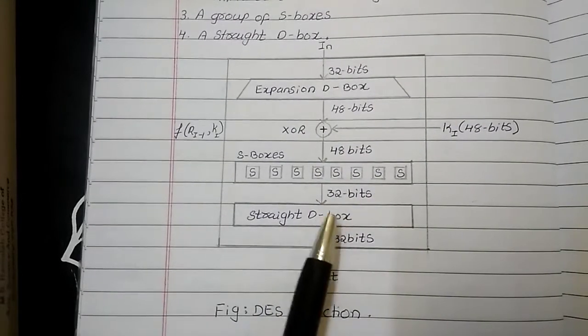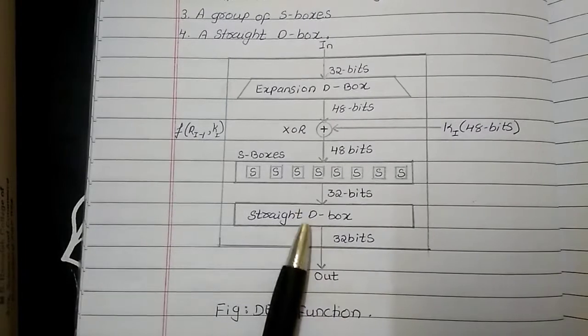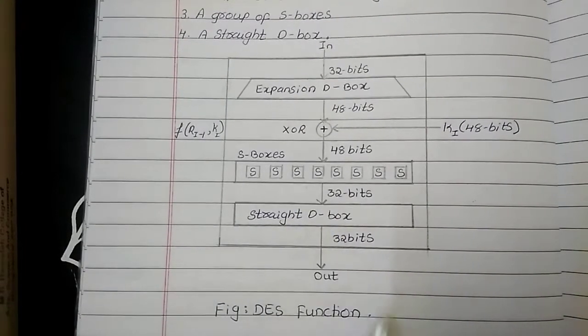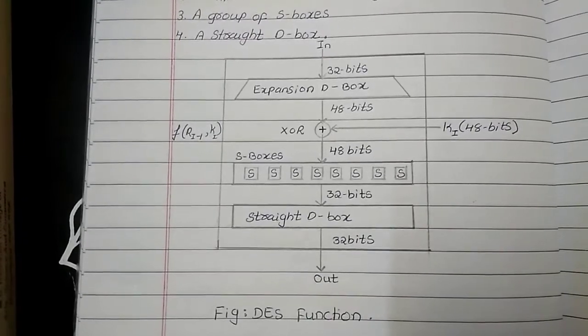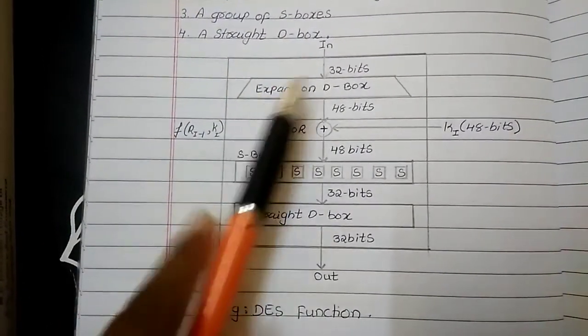6-8s are 48. And producing the output of 32-bit. That 32-bit is applied to the straight D-box and it is producing the output of 32-bits only. Now, let us see how exactly this expansion D-box works. If you see this is the example of expansion D-box here.